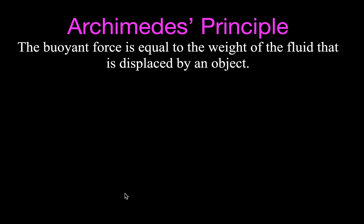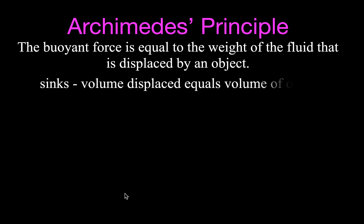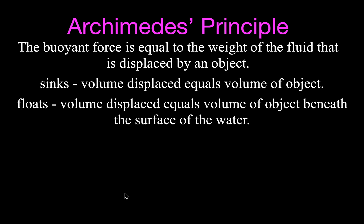Archimedes' Principle says that the buoyant force is equal to the weight of the fluid that is displaced by an object. If the object sinks, then the volume displaced is equal to the volume of the object. If the object floats, the volume displaced equals the volume of the object that is beneath the surface of the water.